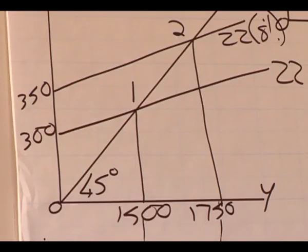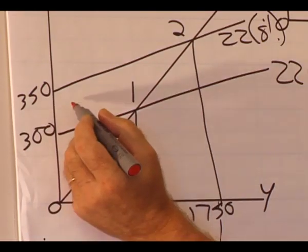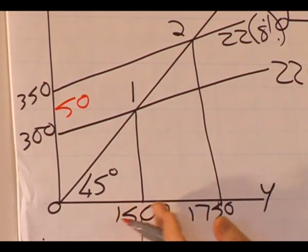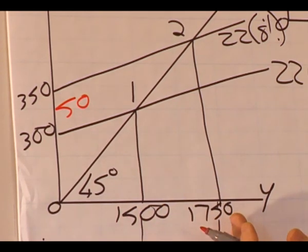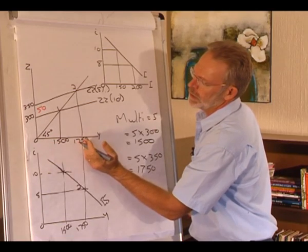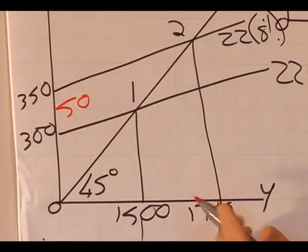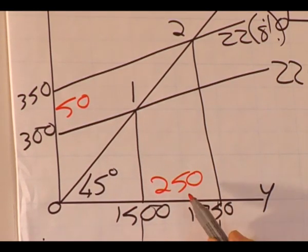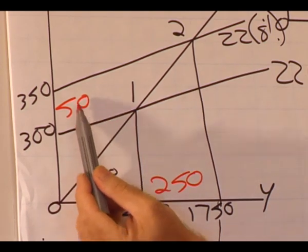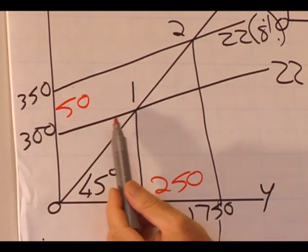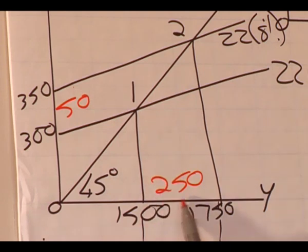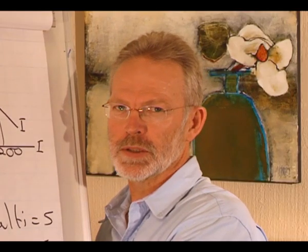Something else you might have noticed is that the increase in investment of 50 led to a much bigger increase in the level of production — from 1,500 to 1,750, in other words by 250. Why is this so? The increase in investment started the multiplier process, and that has led to the big increase of 250 because of the multiplier process.